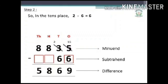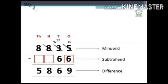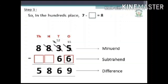Step 2: In the tens place, 2 minus 6 is equal to 6. Here also 2 is less than 6, so borrowing 100 from 8 hundreds, leaving 7 hundreds in the hundreds column. So 12 minus 6 is equal to 6 — and 6 is already there in the tens column. Step 3: In the hundreds place, 7 minus dash is equal to 8. Since 7 is less than 8...